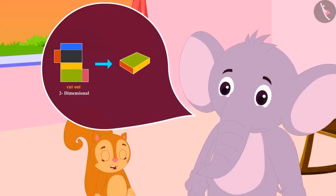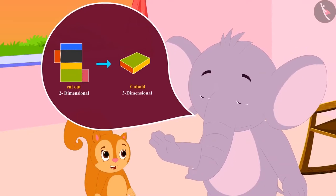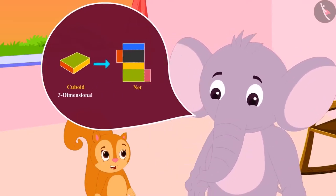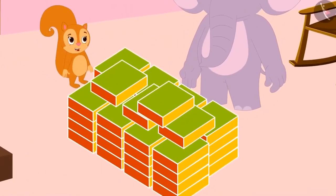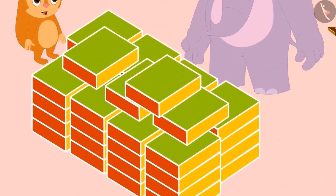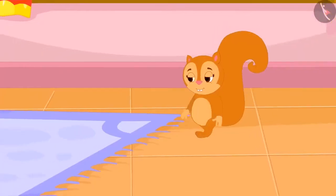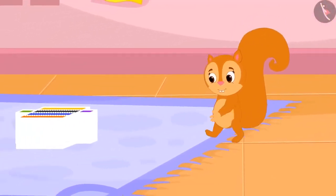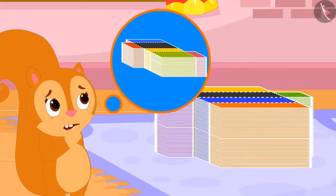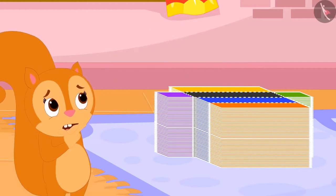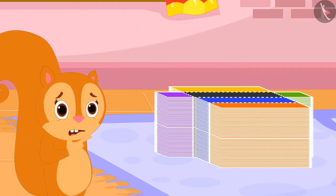Appu also explained to Chanda about the cuboid and its net. Chanda and Appu packed all the laddus. Now Appu wants to pack cashew cutli. Chanda saw cutouts of cashew cutli boxes, which look different from the cutouts of laddus boxes. Chanda is wondering if these cutouts will make boxes.